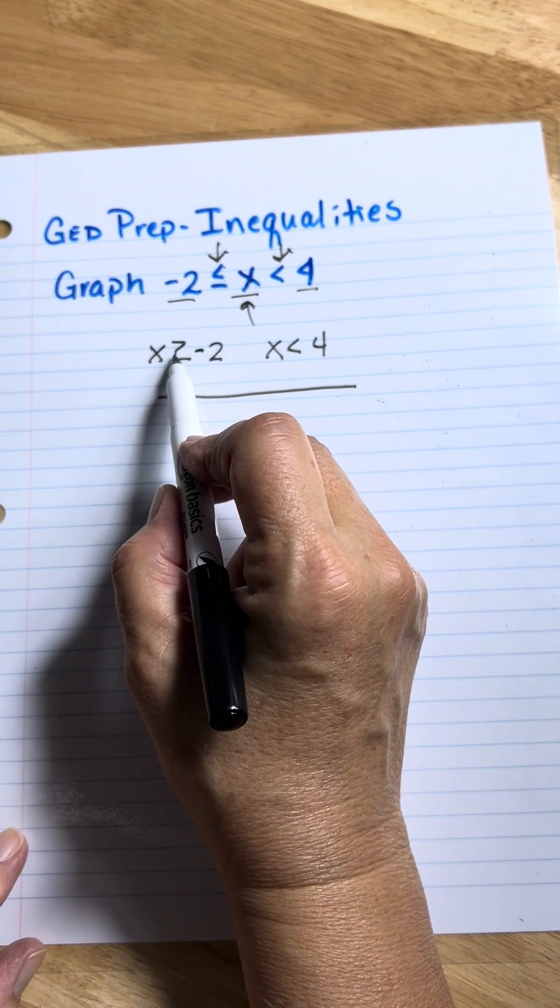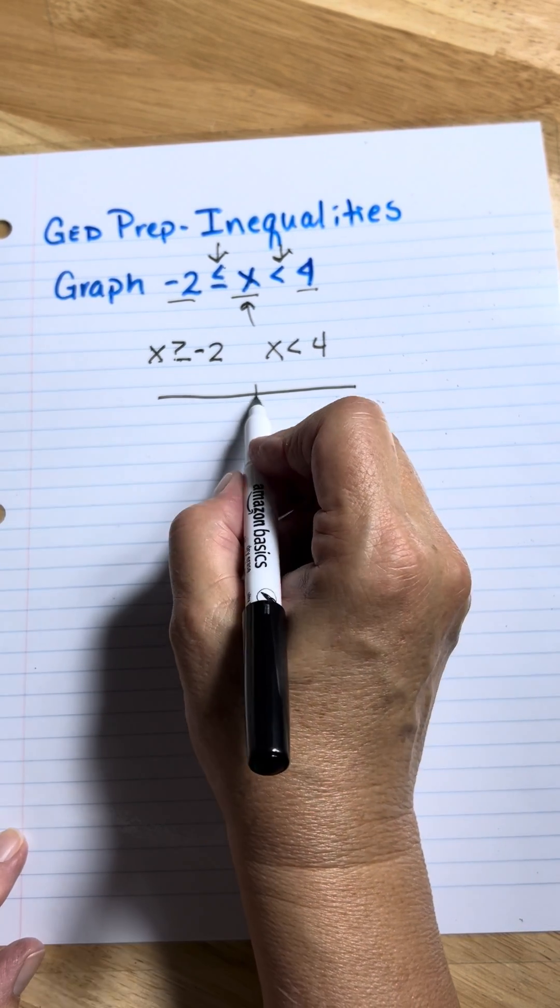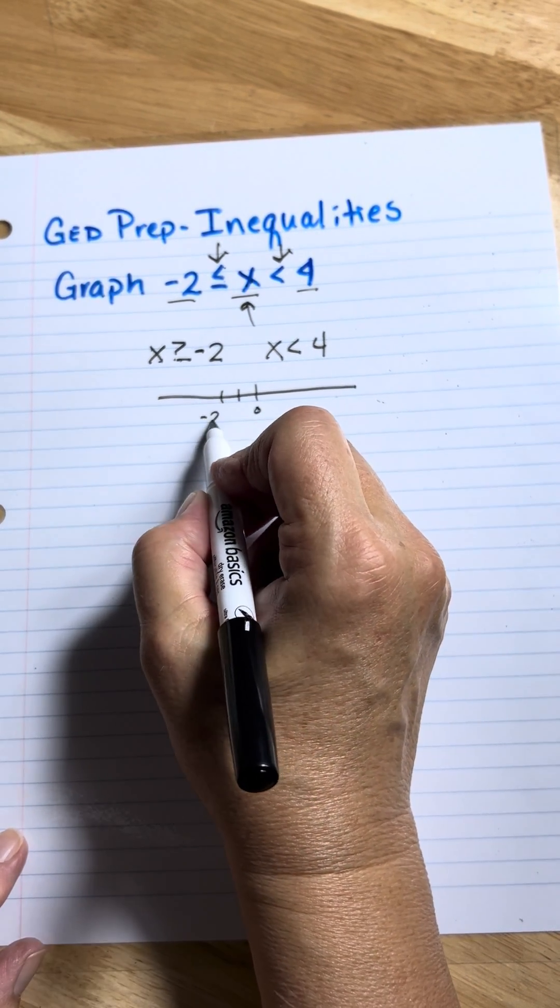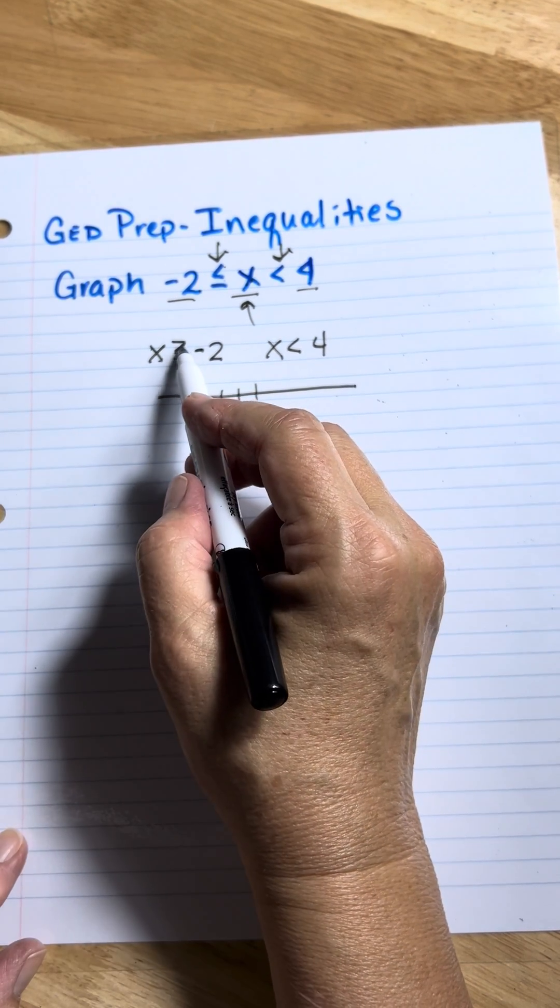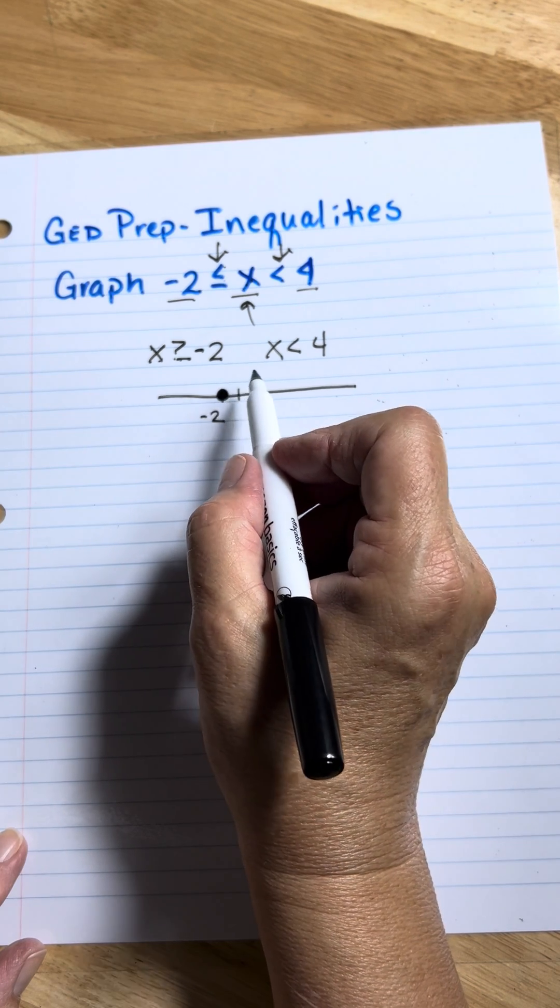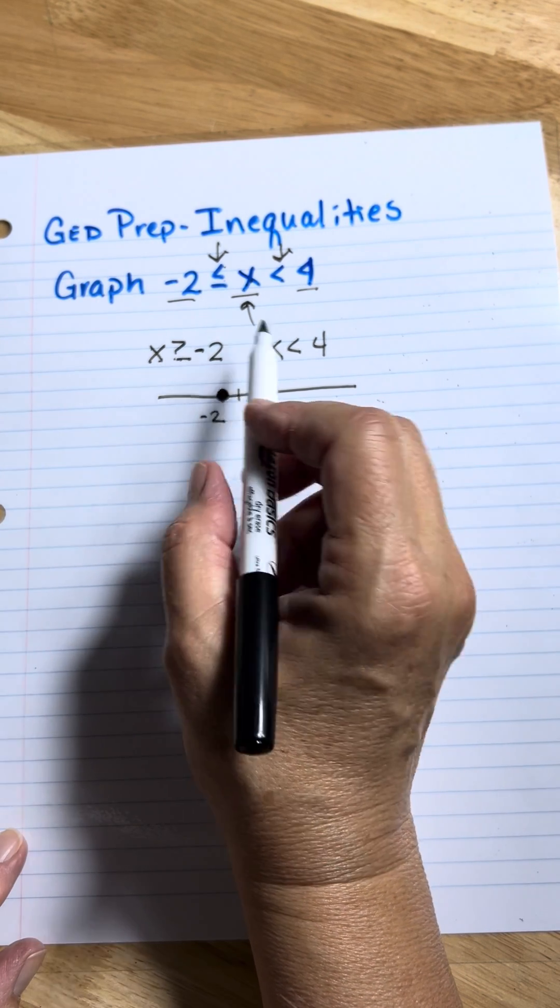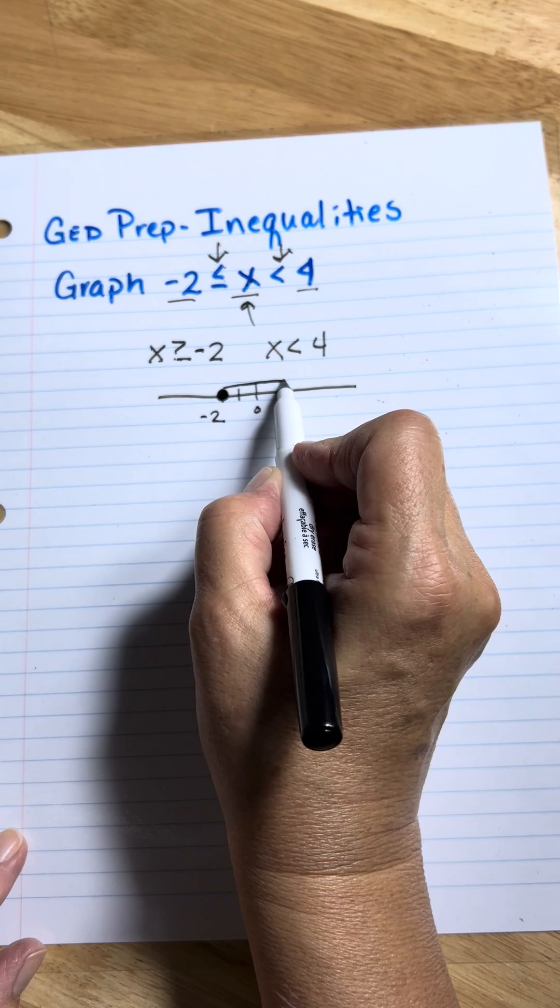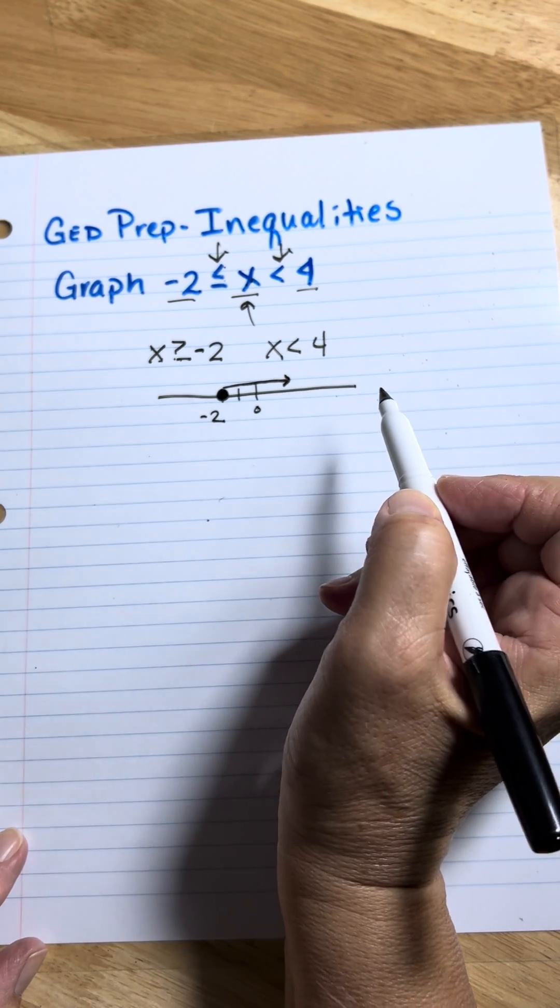So now I know that X is greater than or equal to negative 2. So I'm going to come to the point negative 2. Since it's greater than or equal to, you need a solid dot. Alright, now what direction are the numbers that are greater than negative 2? They're going to go off to the right.